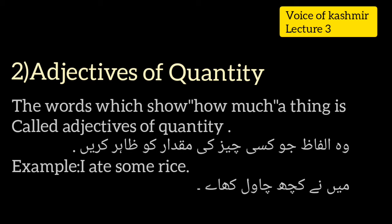The second kind is adjectives of quantity. The words which show how much of a thing are called adjectives of quantity. The main difference between adjectives of quality and adjectives of quantity is that in adjectives of quality we describe the quality of a person or thing, but in adjectives of quantity we describe how much of a thing is available — its amount. For example, 'I ate some rice' — here 'some' is the adjective of quantity.